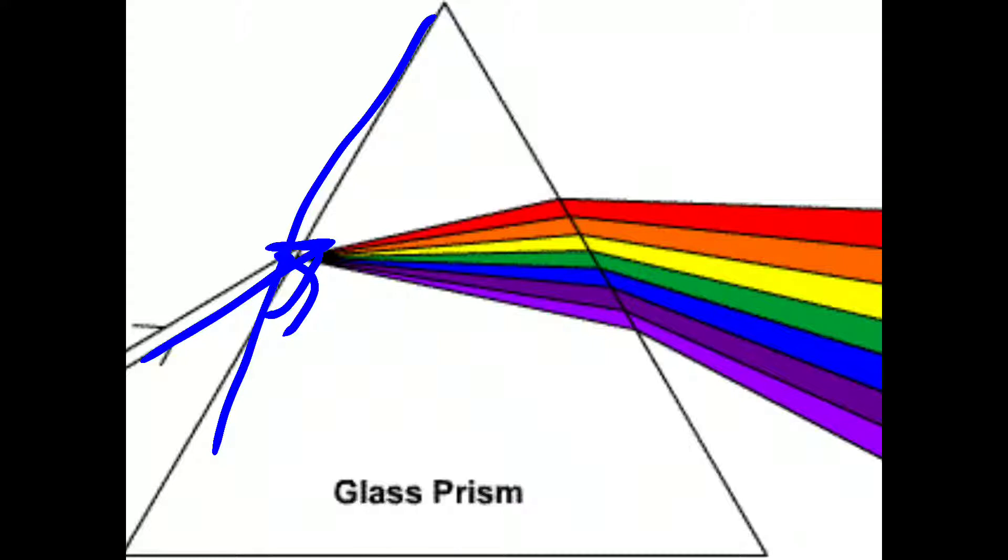It splits into seven colors: violet, indigo, blue, green, yellow, orange and red, which we call VIBGYOR - violet, indigo, blue, green, yellow, orange and red.